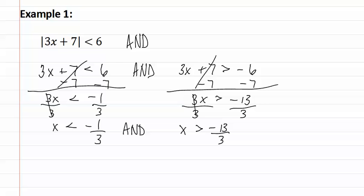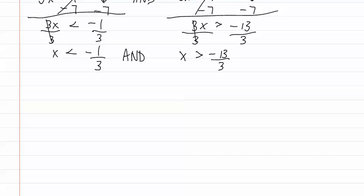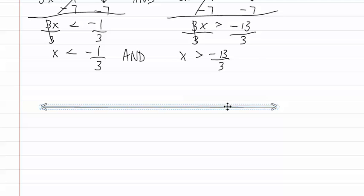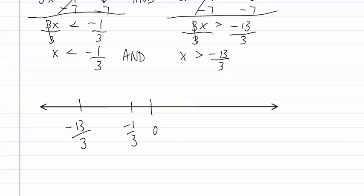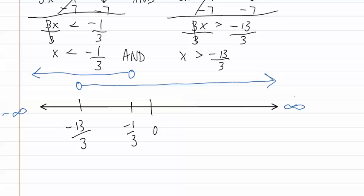We now need to graph this. Let's start by putting zero, negative one-third, and negative thirteen-thirds on the line. First, we have x is less than negative one-third, so we have an open dot going towards negative infinity. Next, we have x is greater than negative thirteen-thirds, so we have an open dot going towards positive infinity. We then look for the portion that overlaps. This would be the area from negative thirteen-thirds to negative one-third, and we draw this portion onto the graph.